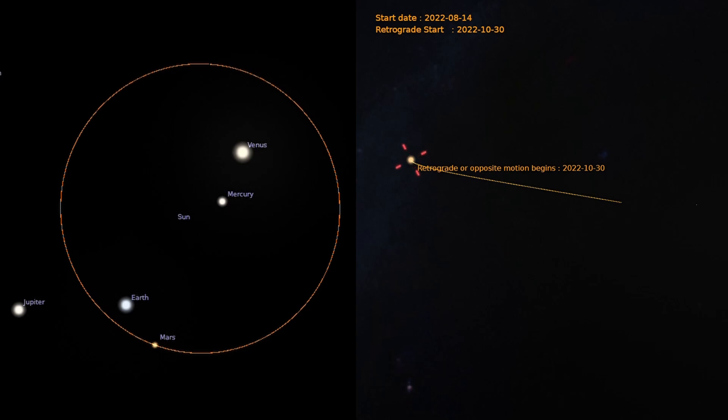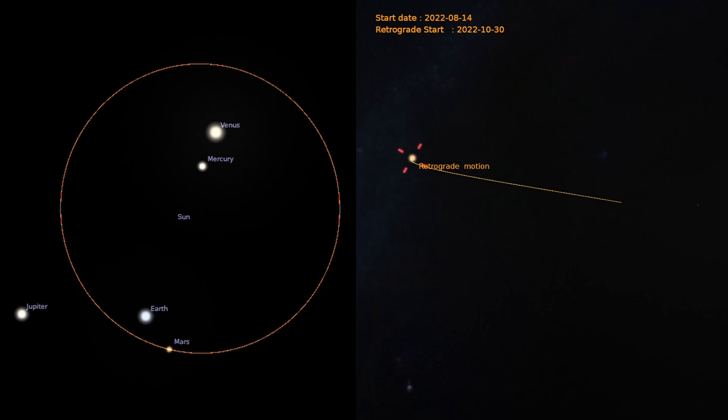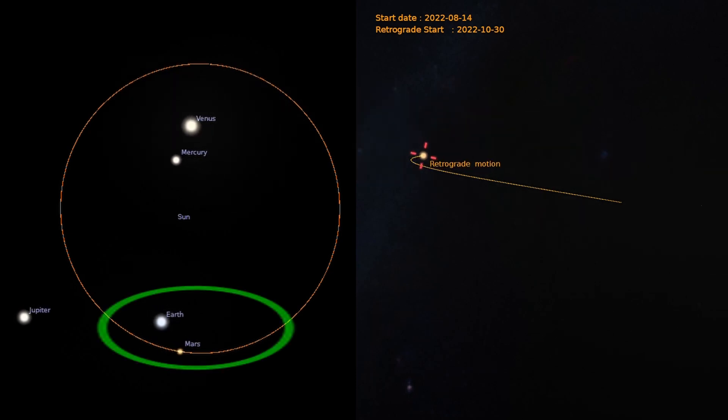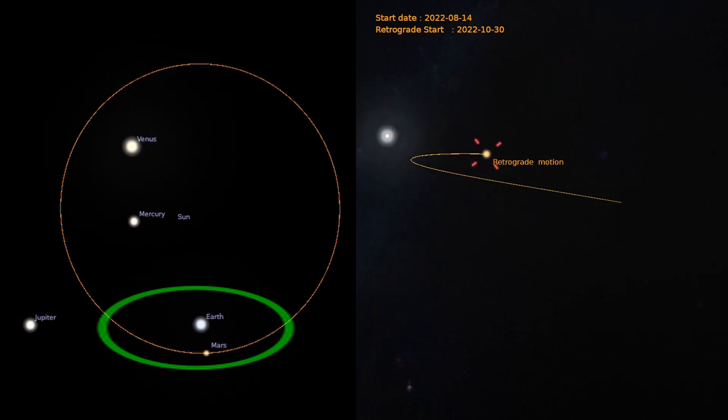This is just an illusion and can be attributed to the speeds with which Mars and Earth revolve around the Sun. This apparent erratic movement is called retrograde motion.